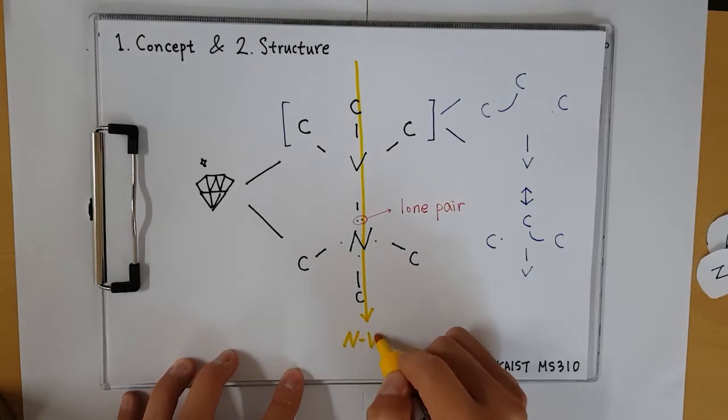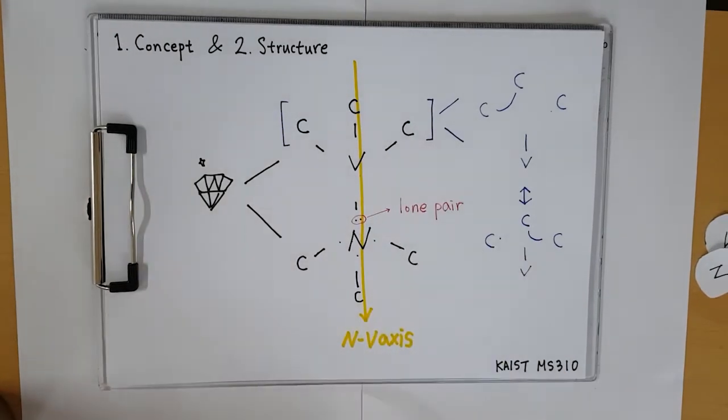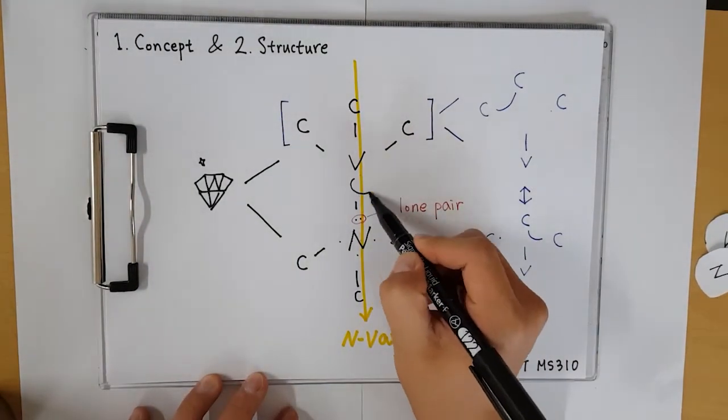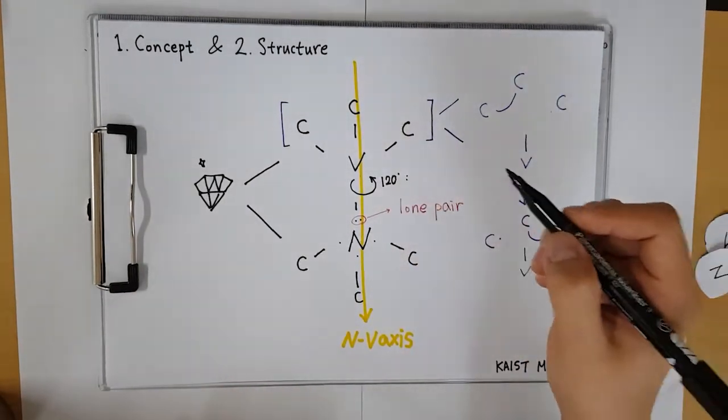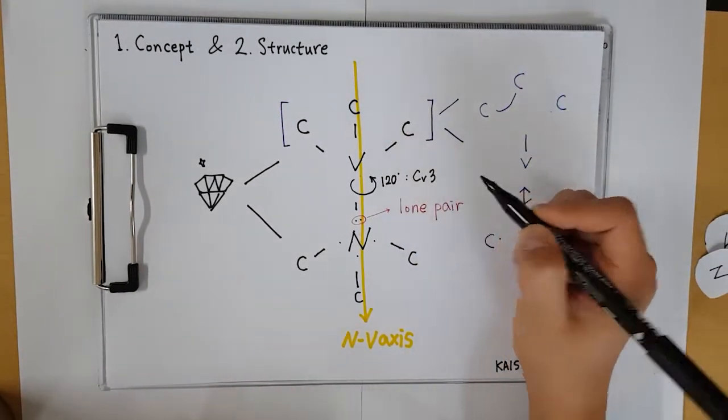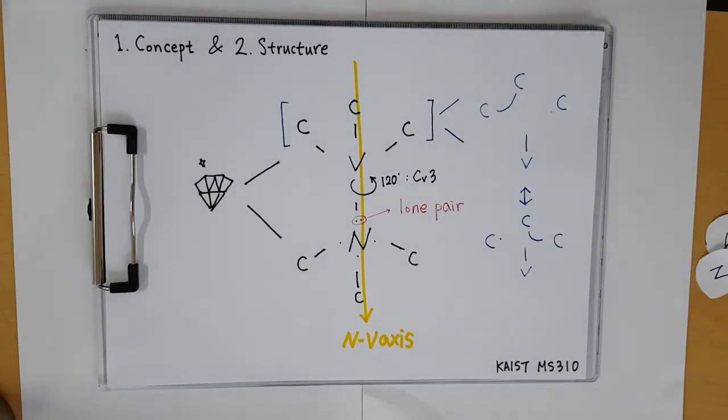Originally, diamonds have a square symmetry. But when the NV Center is formed, part of the symmetry of the square is broken and the rotational and reflective symmetry of the NV axis remains, similar to the symmetry of the Equilateral Triangle in Group Theory called C3v.